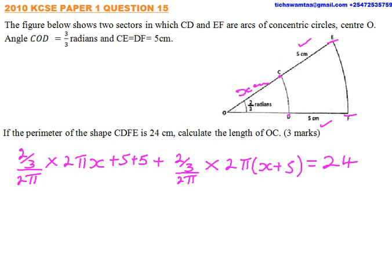So from there, we can now simplify. So 2π divided by 2π, we get is equal to 1. So we multiply 2/3, multiply by X that will give us 2/3X plus 10.